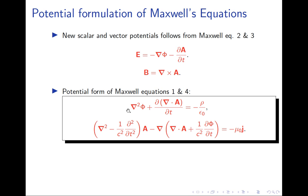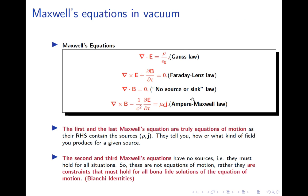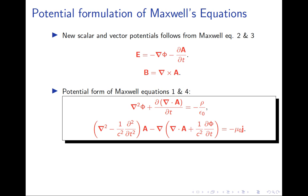Substituting these expressions for E and B in terms of potentials into equations one and four gives the potential version of Maxwell's equations. These are second-order partial differential equations — mixed spatial and time derivatives. One is a scalar equation for φ, the other a vector equation for A. Although they may look uglier than the field version, they are aesthetically pleasing: four equations, four unknowns (φ and the three components of A), matching four source quantities (ρ and three components of J).